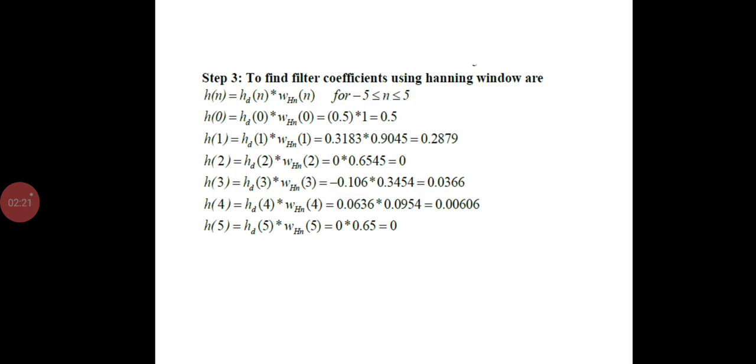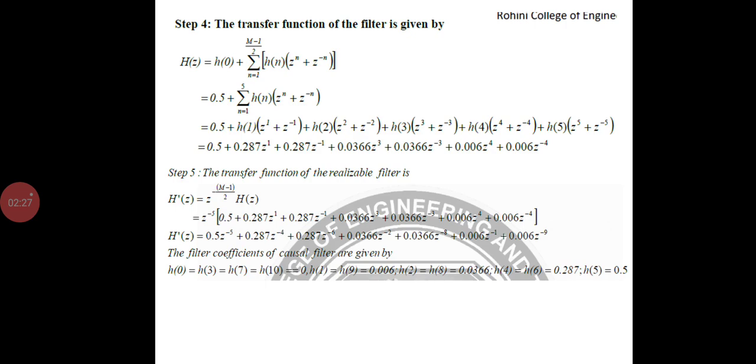Therefore h(n) can be found by using this equation: h(n) times w(n). We find the values from 0 to n-1, that is 5.